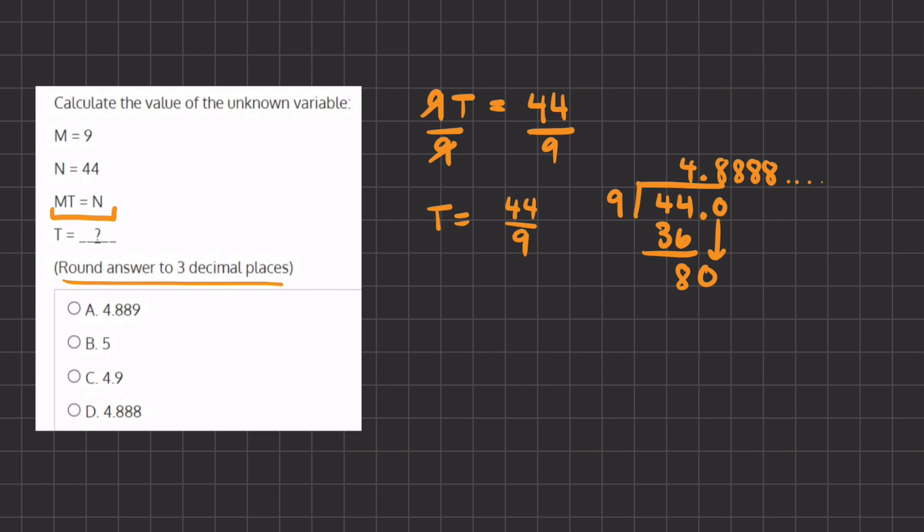So in our answer, we have to round to the third decimal place, so we have to round this number right here, and we're going to look one number over to the right, and because it is greater than 5, we're going to bump up our third number to 9. So our final answer is going to be 4.889, because we rounded our third number.